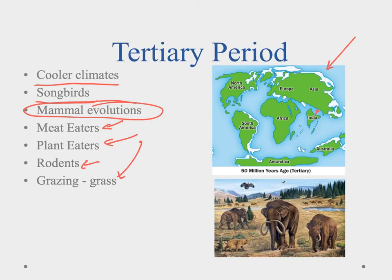If we went back to the tertiary period, what we would see is something that looked a little bit like it does today in the grasslands. You would start to see some of the mammoths and mastodons, you would see birds in the air, large mammal predators — so it's kind of starting to look like what we would see now.